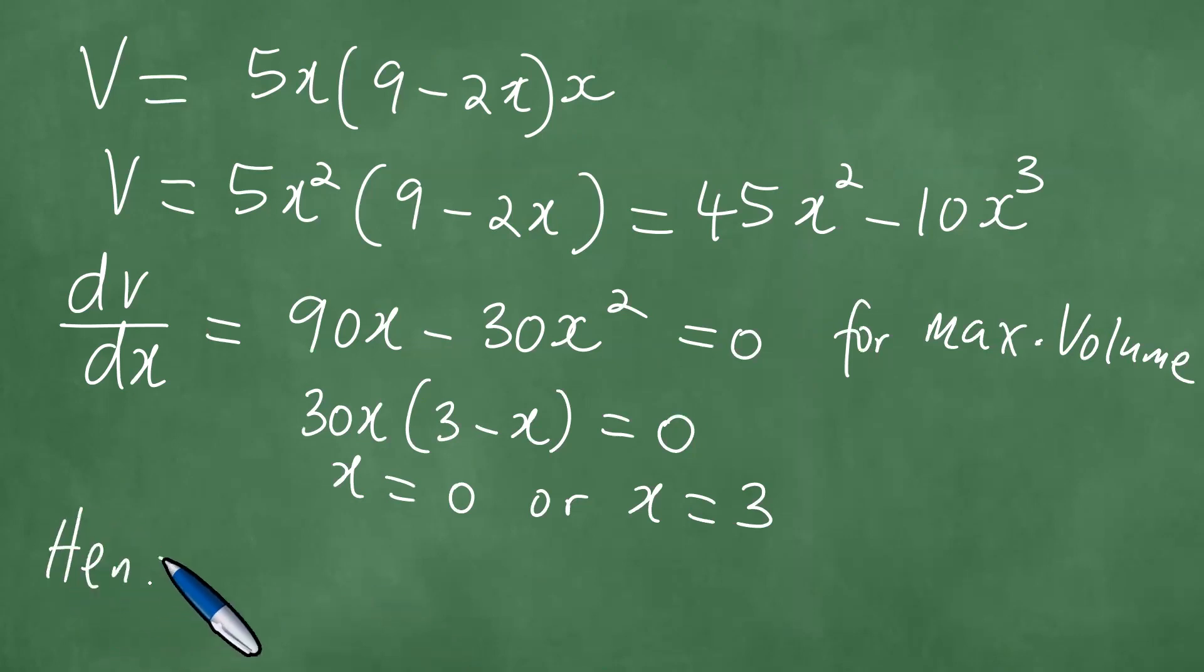Hence, the volume is given by V = 45x² minus 10x³.